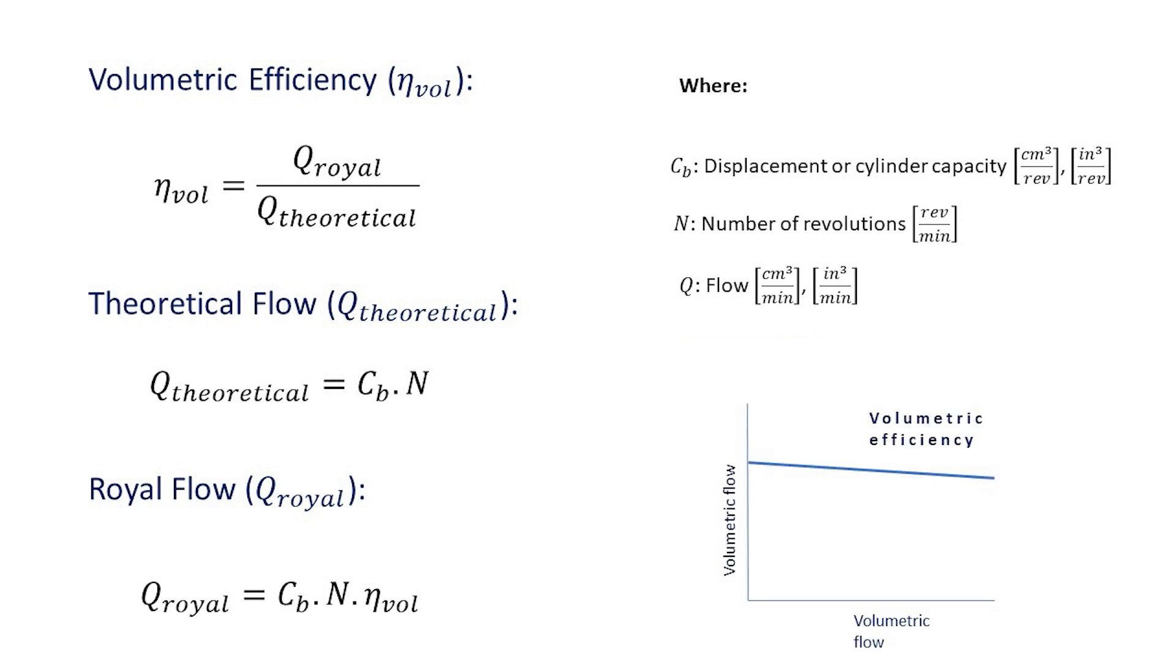In this graph it can be seen that the increase in pressure decreases the volumetric efficiency, since at higher pressure, the oil leaks in the pump are greater. If this parameter decreases, then the actual flow rate at the outlet will also be less.